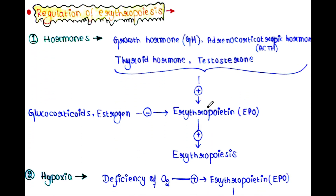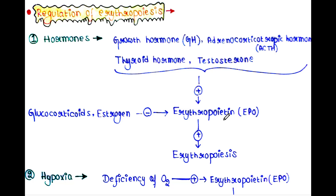Now we will see some regulations of erythropoiesis. Hormones like growth hormone (GH), adrenocorticotrophic hormone (ACTH), thyroid hormone, and testosterone stimulate another hormone — erythropoietin (EPO) — which in turn stimulates the erythropoiesis process. Certain hormones like glucocorticoids and estrogen inhibit erythropoietin, meaning erythropoiesis is inhibited in those cases.